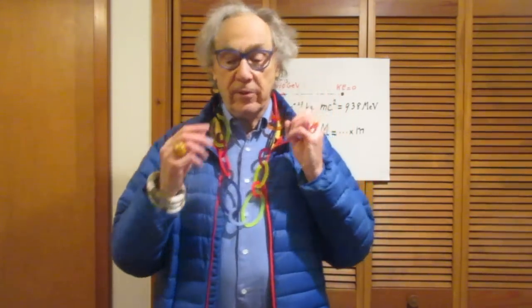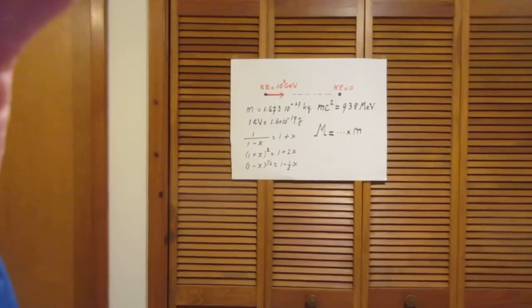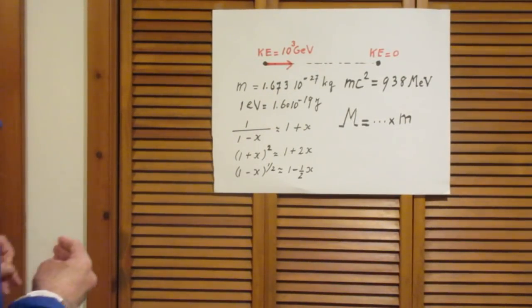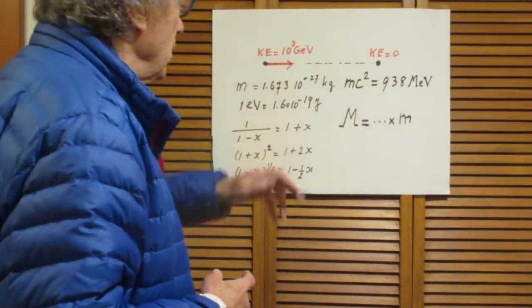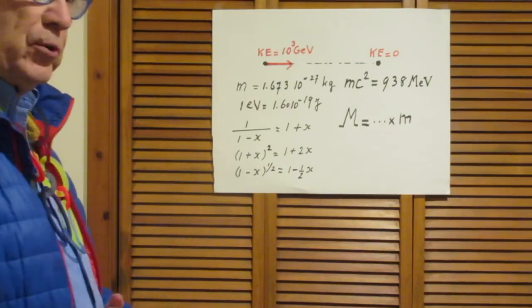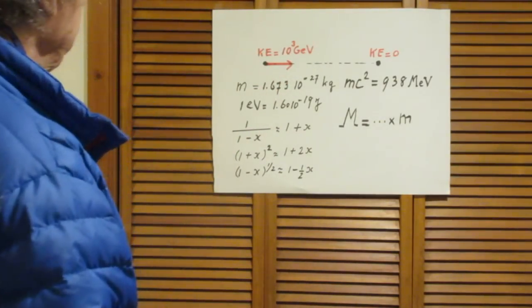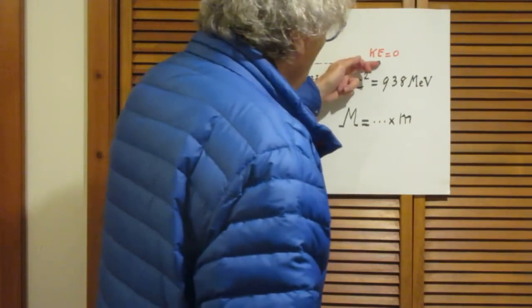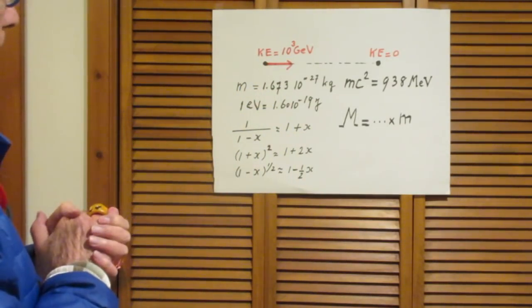Let's first look at the problem. We have an accelerator that accelerates protons to an energy of 1000 GeV. GeV stands for billion electron volts, so 1000 GeV is 10 to the 12 electron volts — this could also be called one tera electron volt. This proton hits another proton which is standing still in the accelerator.